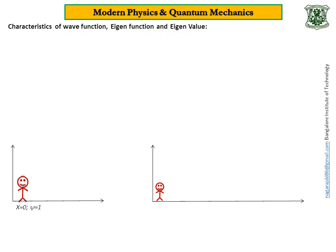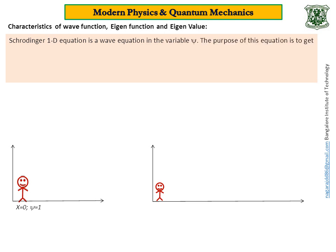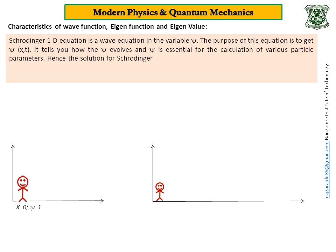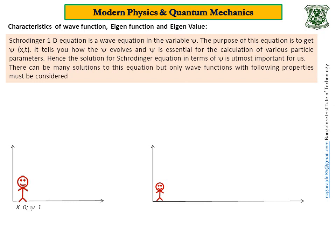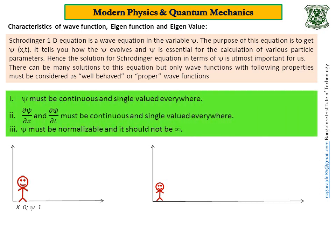Now, I have come to the last part of this session. Here, I will explain characteristics of wave function, concept of eigenfunction and eigenvalue. See, Schrödinger one-dimensional equation is a wave equation in the variable ψ. The purpose of this equation is to get ψ(x,t). It tells you how ψ evolves and ψ is essential for the calculation of various particle parameters. Hence, solution for Schrödinger equation in terms of ψ is utmost important for us. There can be many solutions to this equation. But only wave functions with following properties must be considered as well-behaved or proper wave functions. So we need not consider all solutions as wave functions. We have to consider only those solutions which are satisfying the following conditions. These are the conditions.